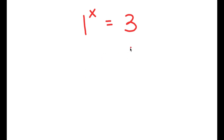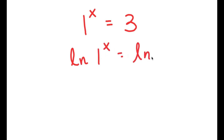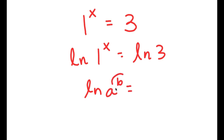Well, let's try to solve this equation the way we would solve any other exponential equation. The first thing I would do is take the natural log, or ln, on both sides. So I get ln of 1 to the power of x is equal to ln 3. Now, if I have something in the form ln a to the power of b, I can move this exponent b to the front, so this can equal b times ln a.